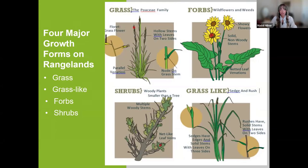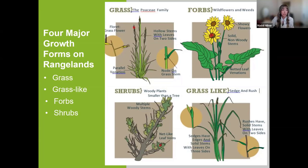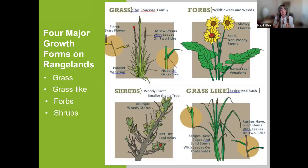Grasses have hollow jointed stems, are herbaceous plants with parallel veining in stems and leaves, and fibrous roots. They don't produce colored flowers and their seeds are often grain-like. Grass-like plants such as sedges or rushes look like grasses but have solid stems without jointing. Shrubs are woody plants that regrow leaves and flowers on the same stems year after year, typically have broad leaves and produce seeds and berries, and have multiple main stems instead of one main trunk like a tree.